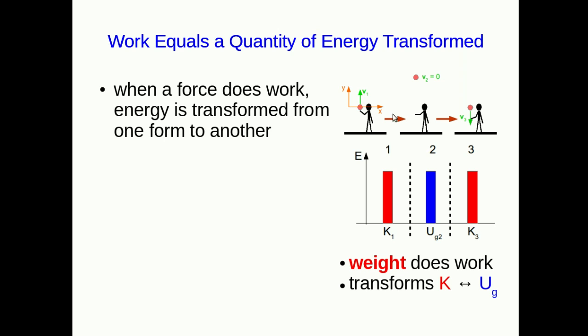And it's apparently resulting in transformations of energy back and forth between kinetic and gravitational potential energy. And notice that it's both ways. As the ball goes up the only force doing work is the weight. And it's resulting in kinetic energy being transformed into gravitational potential energy. And as the ball goes back down again the only force doing work is the weight. And it's resulting in the energy being transformed from gravitational potential energy back into kinetic energy.